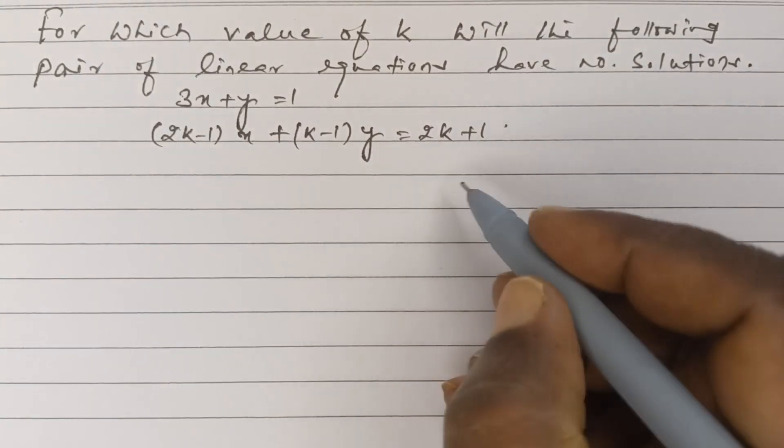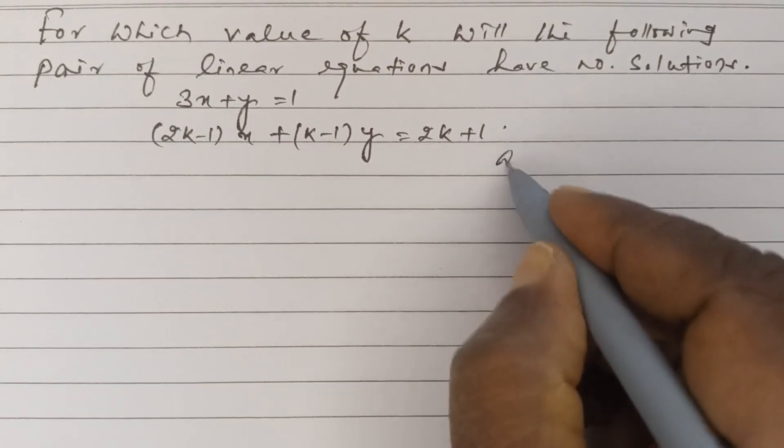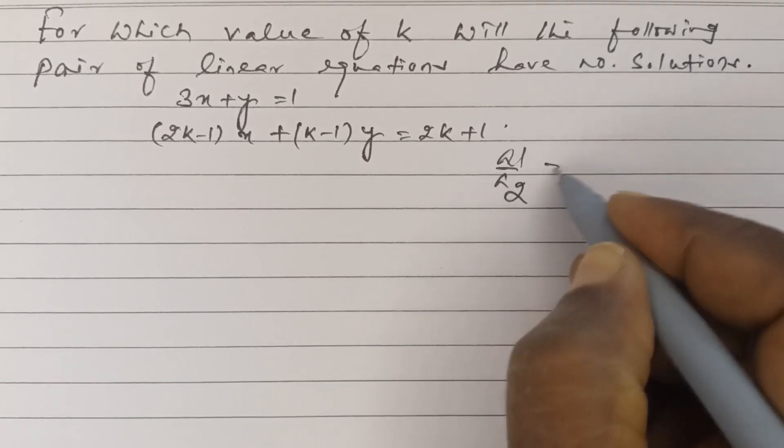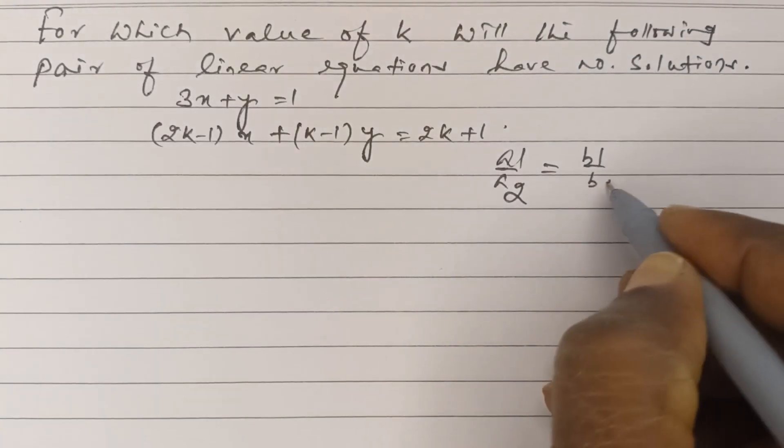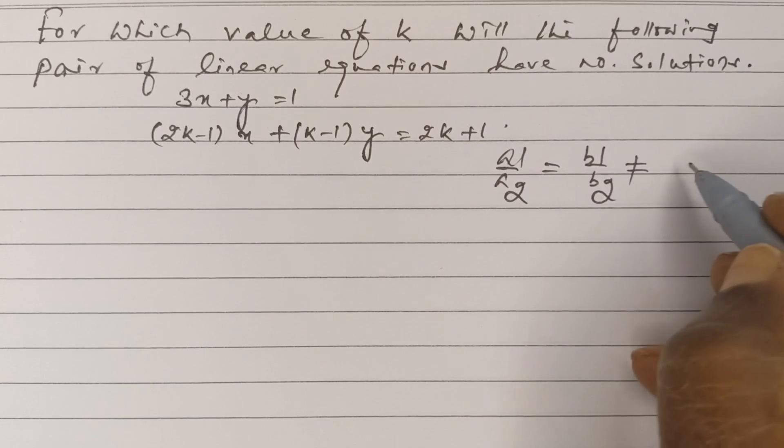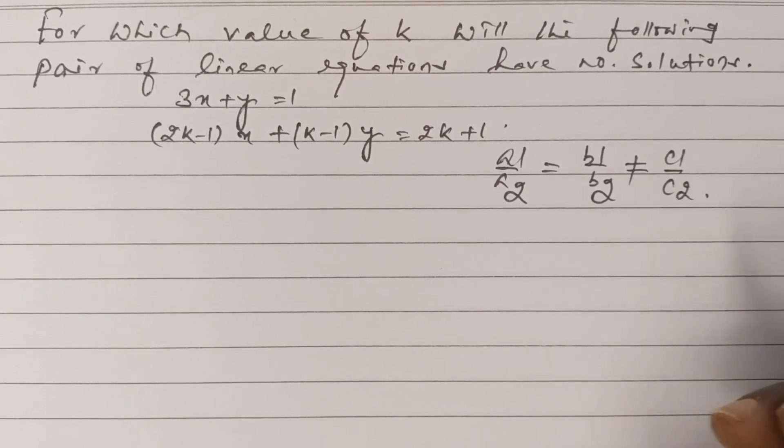Now, as per the rule, for no solution, a1 by a2 is equal to b1 by b2, which is not equal to c1 by c2.